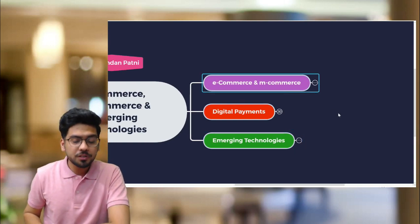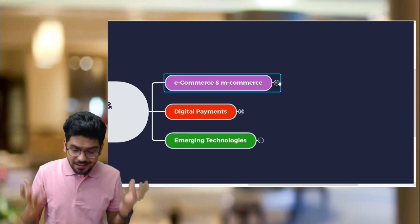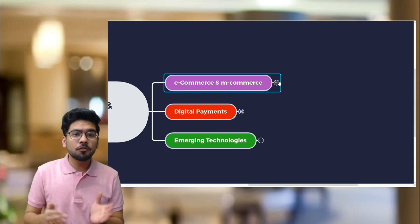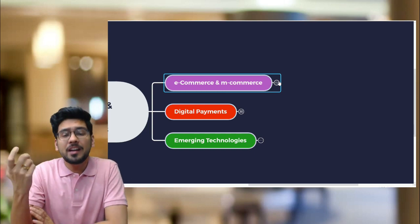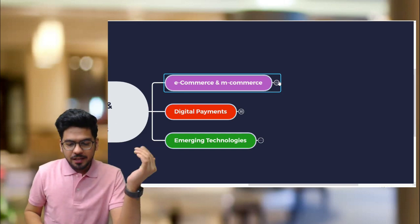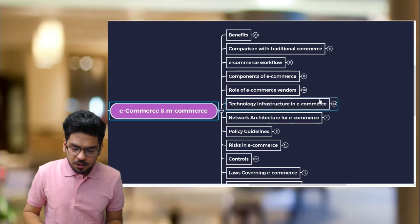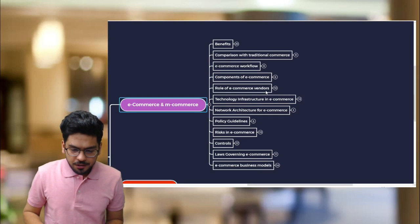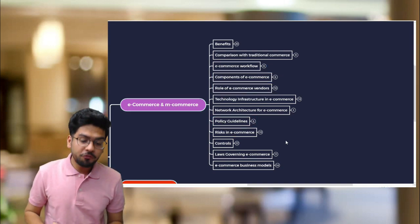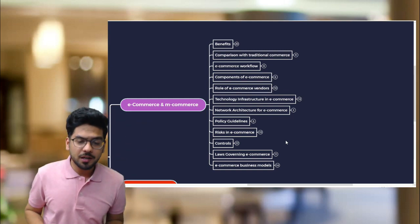E-commerce is the process of doing business electronically. M-commerce is doing business electronically — buying and selling of products and services using handheld devices such as mobile phones or tablets. In the e-commerce and m-commerce section, we have 12 topics in total to cover.